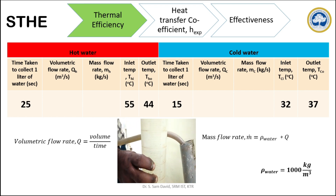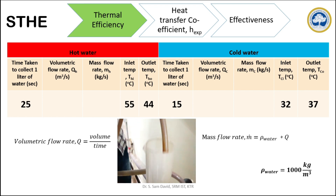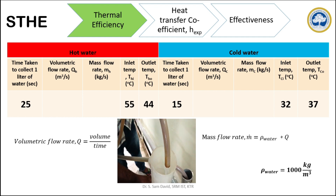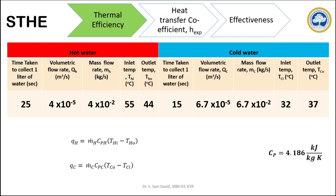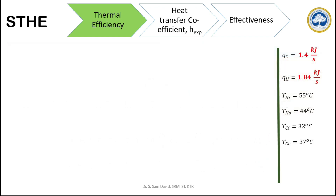Once we calculate the volumetric flow rate, we can multiply that with the density of water — in this case, 1000 kg per meter cube — and we can calculate the mass flow rate. As the required experimental data is over, we can move on with the calculations. The heat exchanged by the hot fluid and the cold fluid is given by this equation. As we already found the temperature and mass flow rate of the hot fluid and cold fluid, by using Cp = 4.186 kJ per kg Kelvin, we can calculate the heat exchanged by the hot fluid and cold fluid.